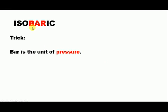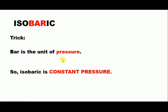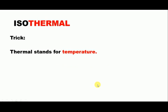The very first process is isobaric. As you can see, 'bar' is there in this particular term. Bar is the unit of pressure. So ISO is constant, bar is pressure, so it becomes constant pressure.